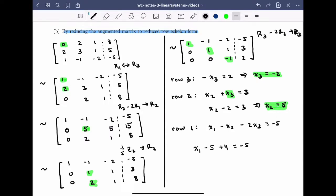Giving me x1 minus 5 plus 4 is equal to minus 5. In other words, x1 is equal to minus 4. So, I've solved the linear system as x1 equals minus 4, x2 equals 5, and x3 equals minus 2.